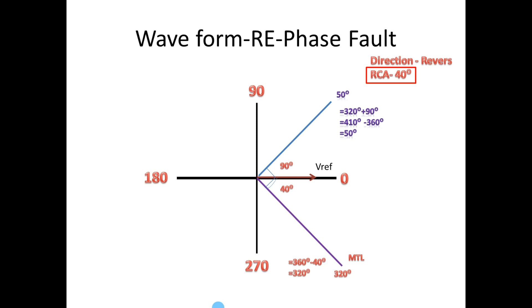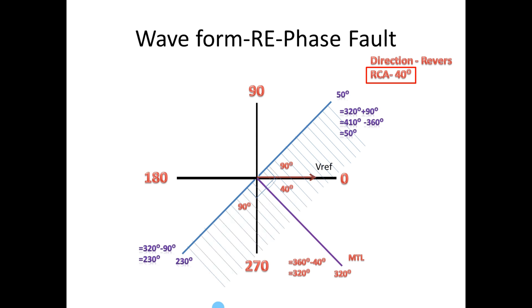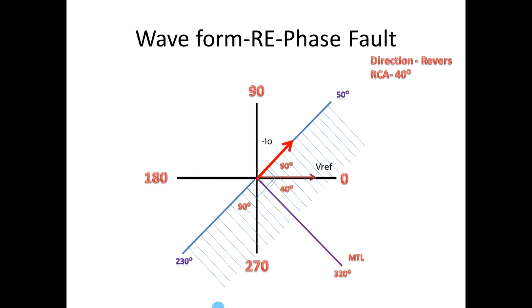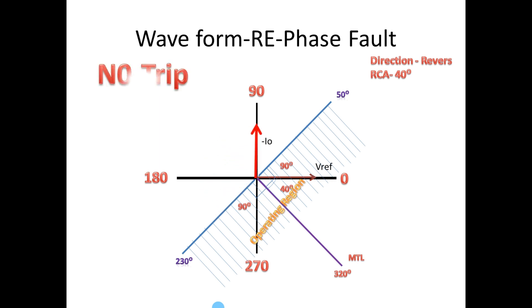Now make MTL as reference and take 90 degrees in the anticlockwise direction: add 90 to 320 to get 410 degrees, which is above 360, so we convert to get 50 degrees — draw a line here. Again make MTL as reference and take 90 degrees towards the clockwise direction: subtract 90 from 320 to get 230 degrees — draw a line here. These two lines are the zero torque line. This is the operating region; the other is the non-operating region. If the fault current is above the pickup value and comes into the operating region, the relay will pick up and give a trip command. Otherwise, even if the fault current is above the pickup value but falls in the non-operating region, the relay will not pick up and will not give any trip.